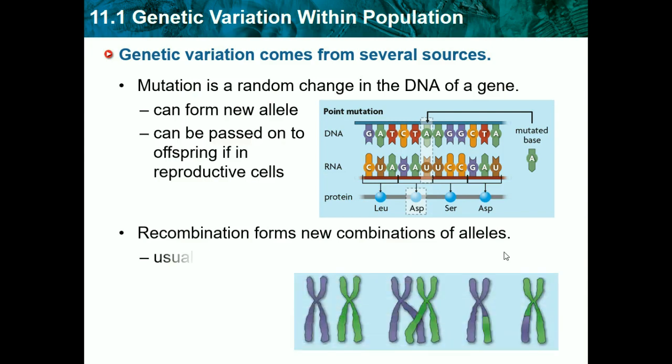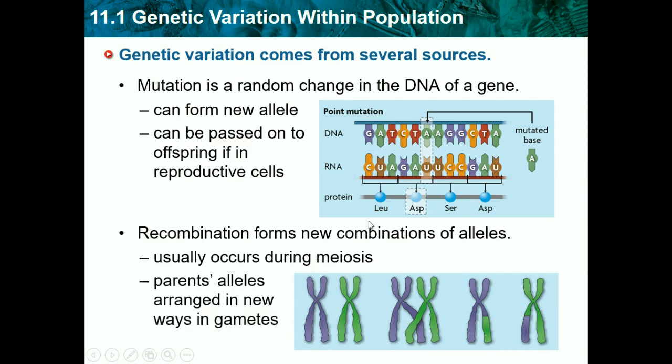Recombination can occur during crossing over in meiosis, where parent alleles are arranged in new ways in gametes.